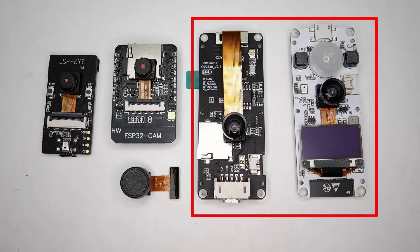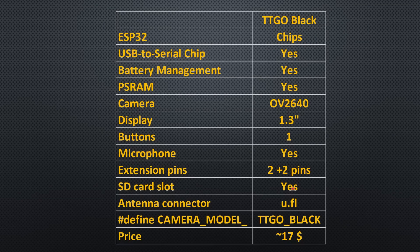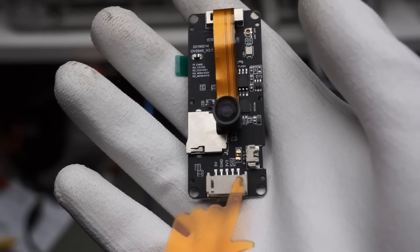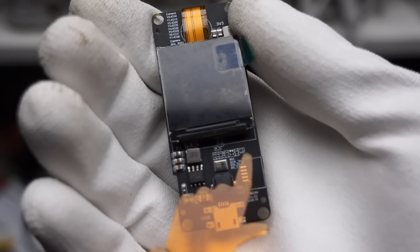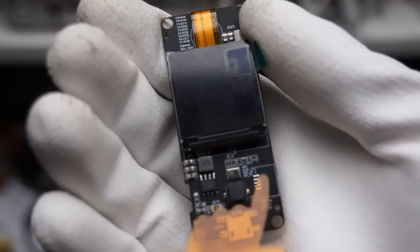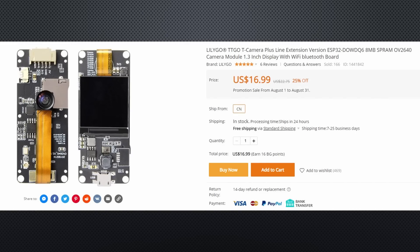The next two boards are from TTGO and follow their strategy to create various boards with different components, so you can select which one fits your purpose without needing to solder. The first one, I call it the TTGO Black, has an SD card reader, a microphone, and a large 1.3-inch OLED display on board. It also has battery management for a 3.7V Li-On battery. It has no pins, only a connector with 3.3V, 5V, and 2 GPIO pins. You can attach an external antenna and use I2C devices via a BMP280 connector space. Its price is around $17.